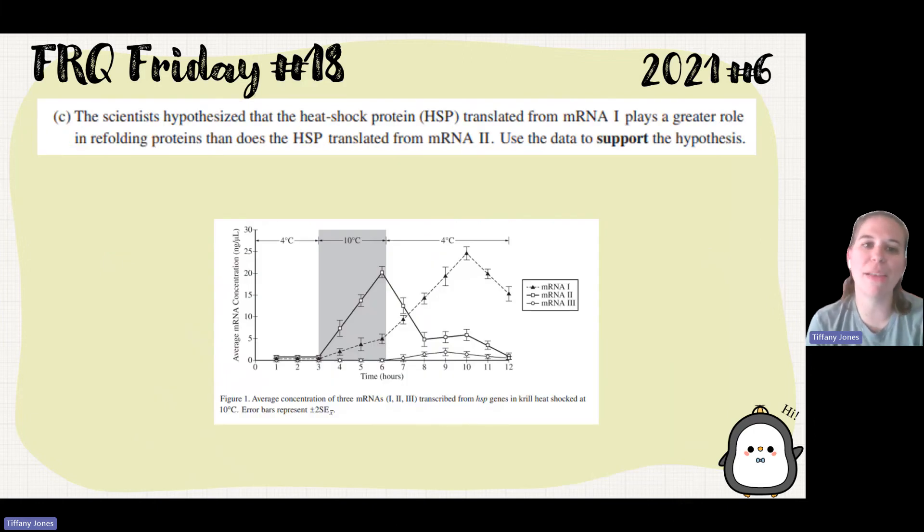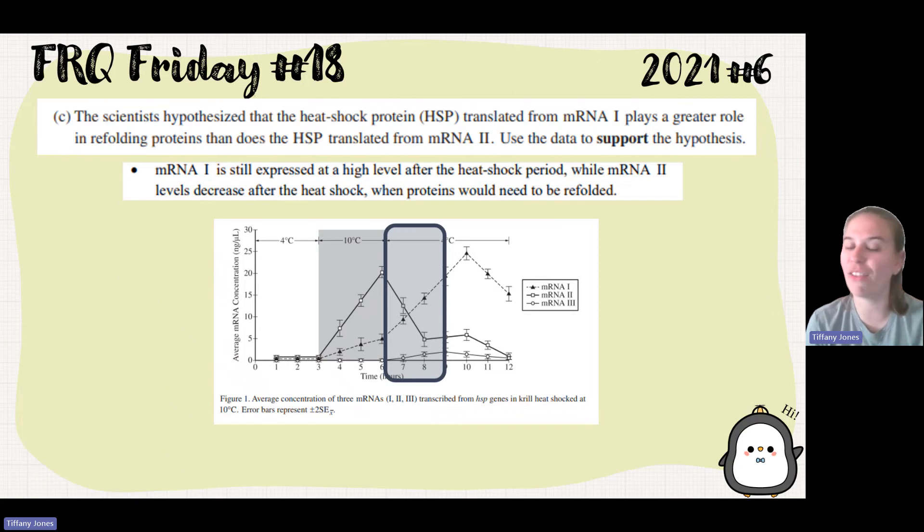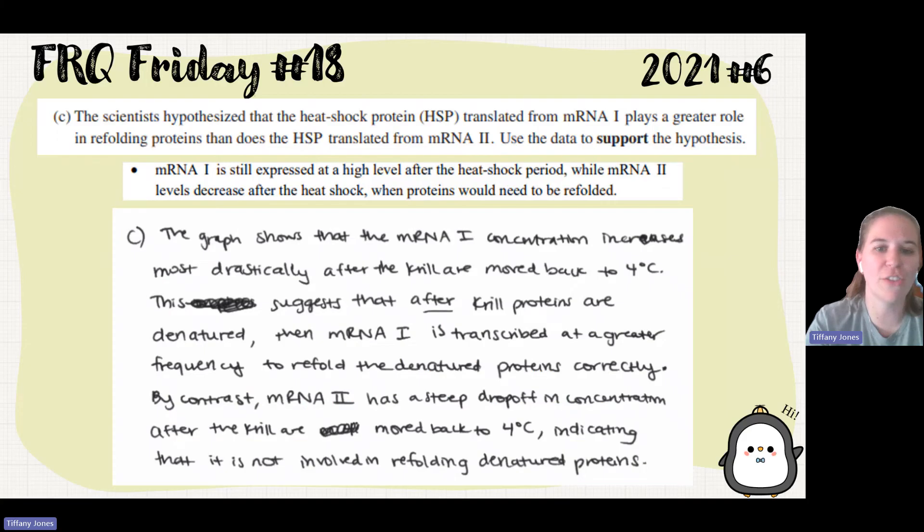So Part C says the scientist hypothesized a heat shock protein translated from mRNA 1 plays a greater role in refolding proteins than does heat shock protein translated from 2. Use the data to support the hypothesis. So if we look here, we see that 2 decreases, but 1 continues increasing. If the point is to reform those proteins, it's going to take place after we've gone through the heat shock and was back in this normal environment. So you can see that mRNA 1 is still expressed at a high level after the heat shock period, while 2 levels decrease after that heat shock when the proteins are needing to be refolded.